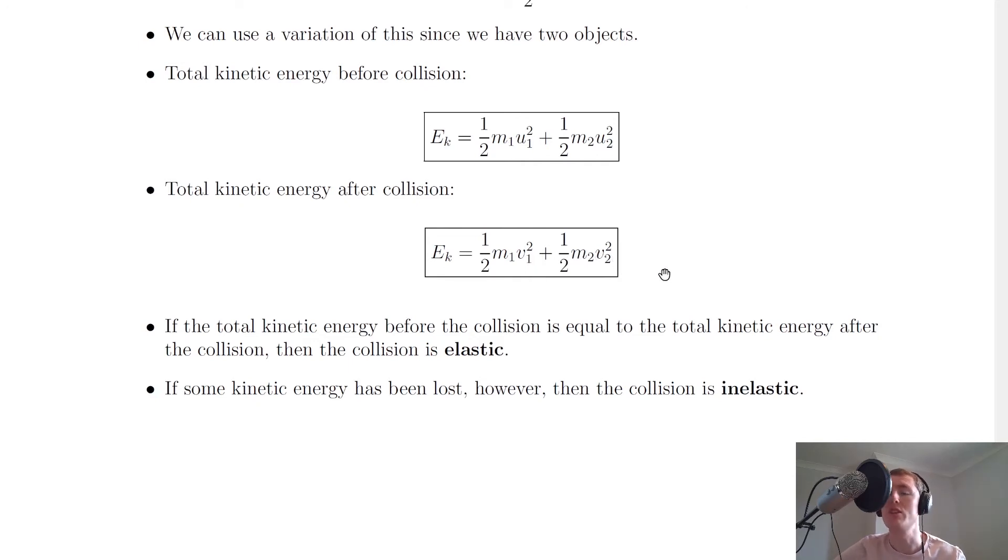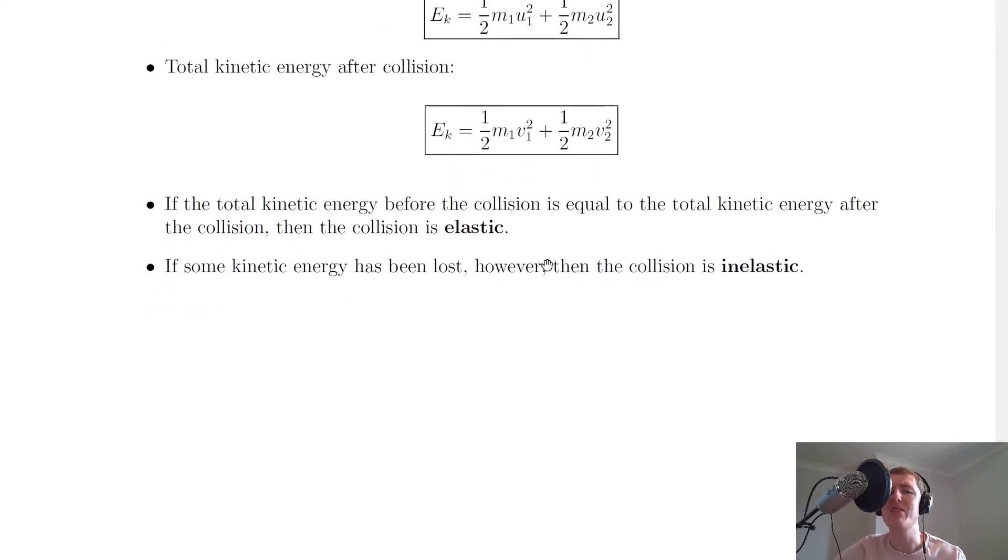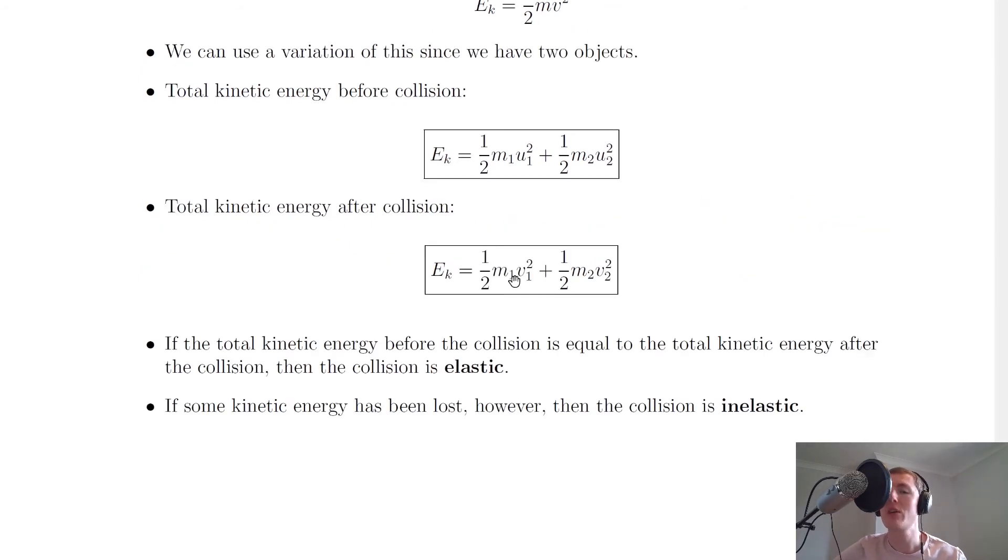If the total kinetic energy before the collision is equal to the total kinetic energy after the collision, or thereabouts, then the collision is said to be elastic. If some kinetic energy has been lost, however, then the collision is said to be inelastic. So if we do the two calculations of kinetic energy before and after the collision, if we find that the two values are the same, then it's an elastic collision. But if the two values are not the same and there's obviously been a lot of kinetic energy lost, then it's going to be an inelastic collision.